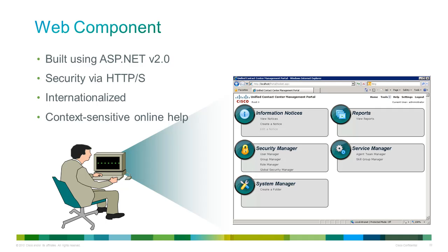A user can override the browser locale by configuring their culture settings within Unified CCMP. Users can interact with the system using a number of tools according to their permissions: the information notices tool to view or edit information notices; the reports tool to view or edit audit reports; the security manager tool to give security permissions; the services manager tool to edit resources such as agent teams and skill groups; and the system manager tool to create and manage resources within a hierarchical folder structure.